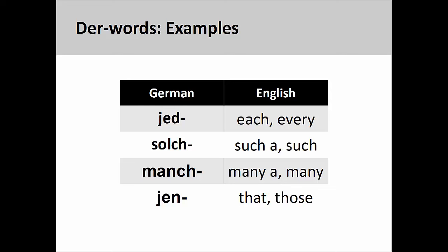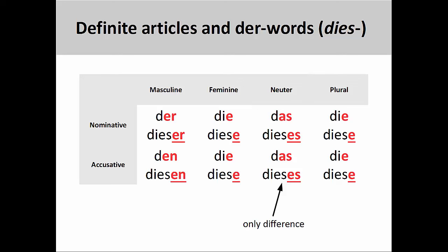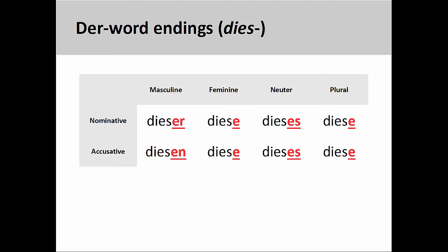I will give you some examples on how to do this at the end of this presentation. Two der-words you will use a lot are dies (this, these) and welch (which). It is important to note that der-words can sometimes also be called dieser-words. As you can see on the screen, the endings for der-words are very similar to those for definite articles. The only difference you should note is the neuter nominative and accusative endings: the definite article ends in -as, whereas der-words have an -es ending. Here is the chart from the prior slide of just dies displayed.